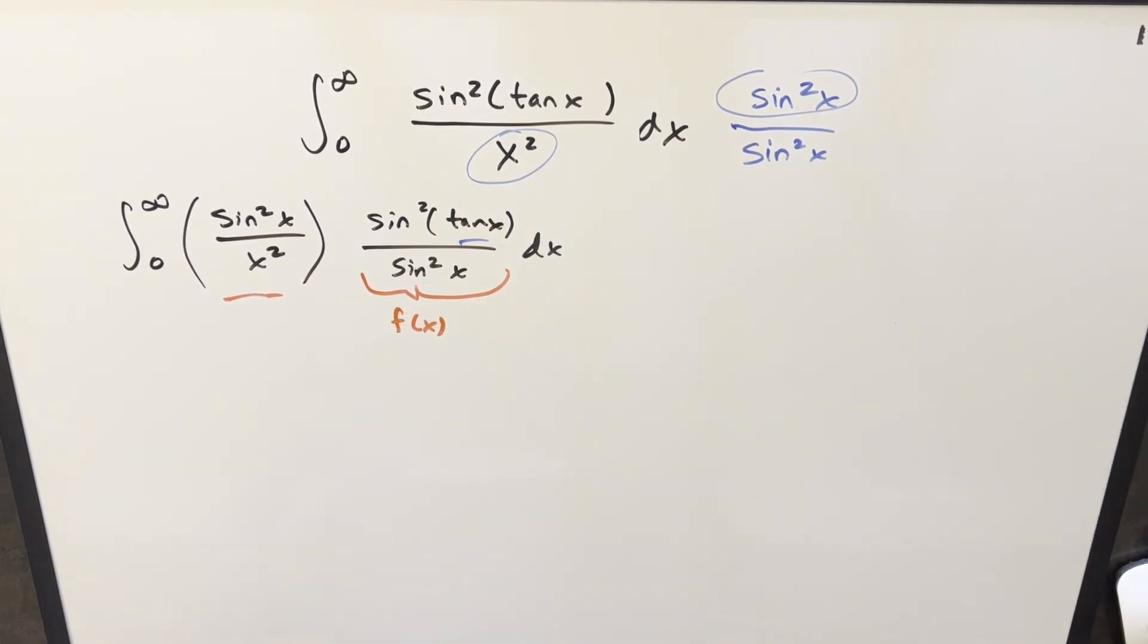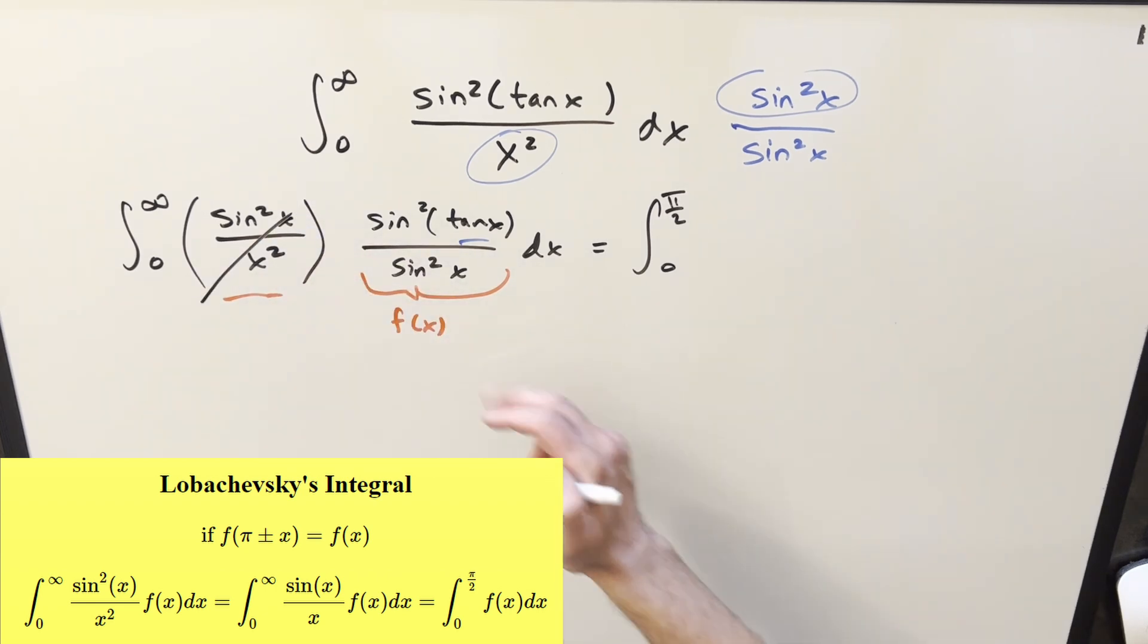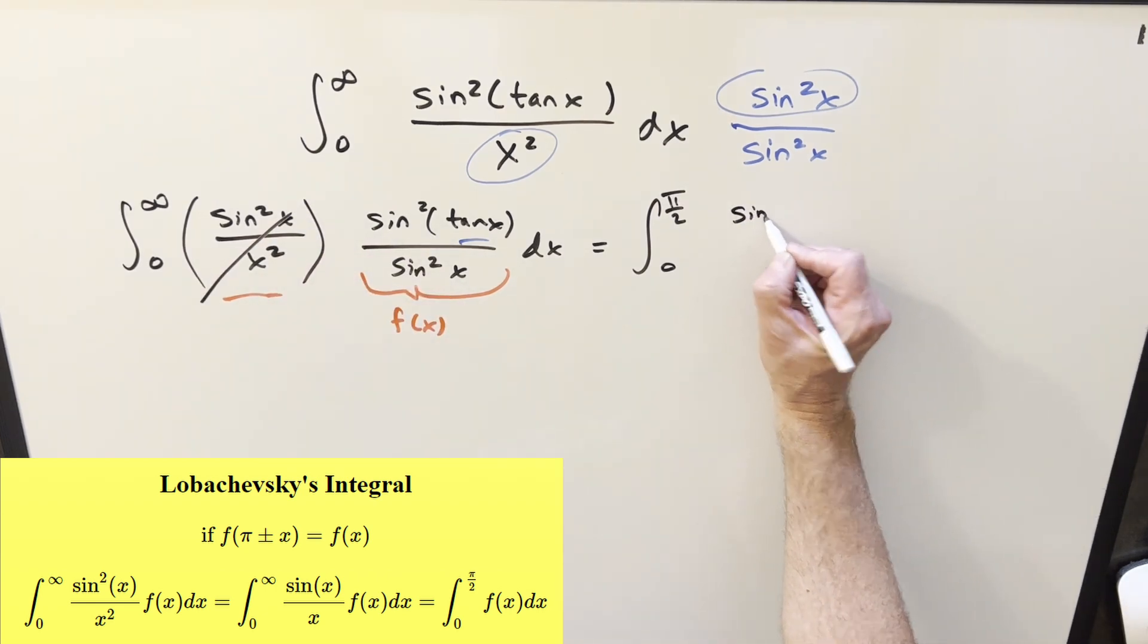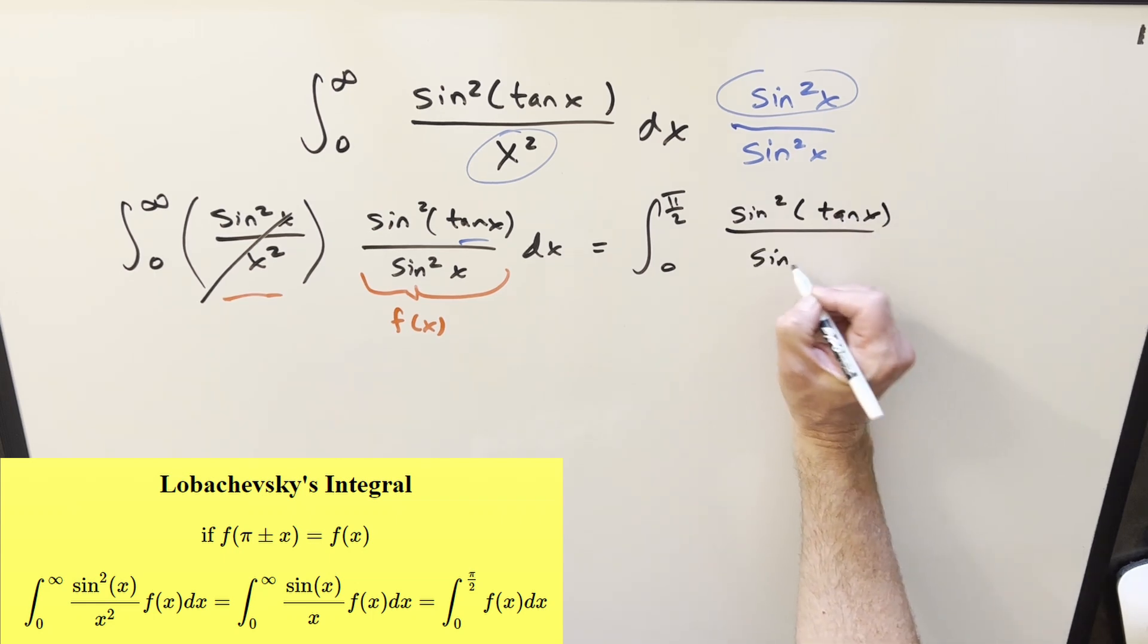So now that we showed the check works, we can go ahead and use our formula. First, what this allows us to do, we reduce the bounds and now it's going to be zero to pi over two. This part goes away and we just have our f of x left. So now we're integrating sine squared tan x over sine squared x.